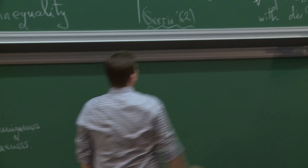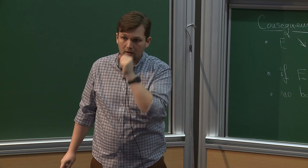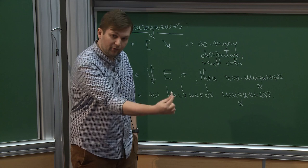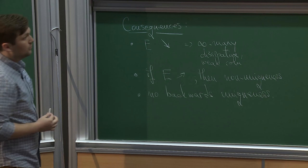Backwards uniqueness is an open problem posed by Serrin. In his paper he asked whether solutions can reach zero in finite time: if you start somewhere nonzero, can you dissipate everything in finite time? The answer in that regularity class is yes. And if you end up at zero, you don't necessarily have to have come from zero — so there's no backwards uniqueness for mild solutions.